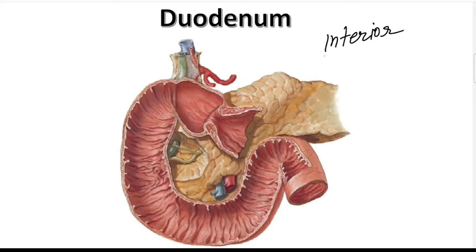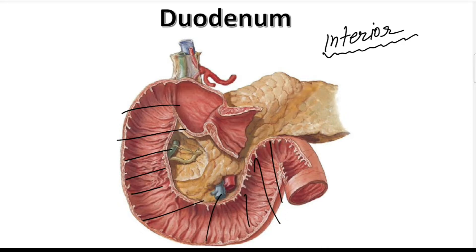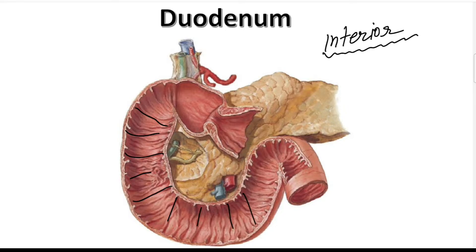In today's video we are going to learn about the interior of the duodenum. In the last video we studied the four parts of the duodenum. We have removed the upper wall and you can see the posterior surface. Mucosal folds are present all around except the first part of the duodenum, which has no mucosal folds.